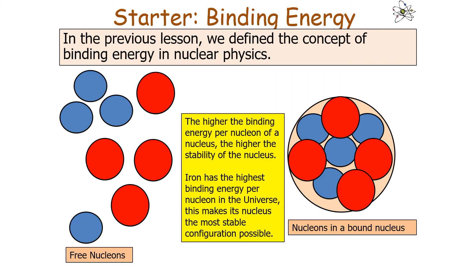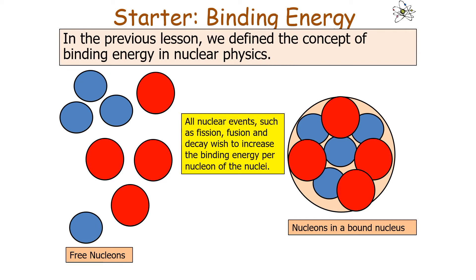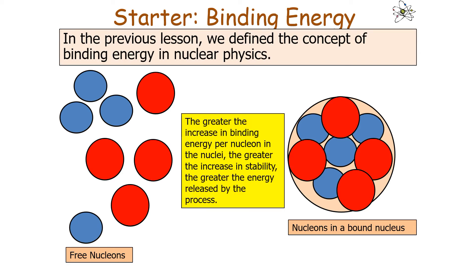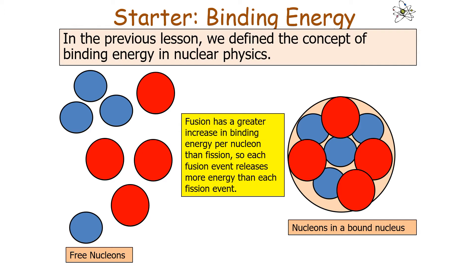Because iron has the highest binding energy per nucleon in the universe, its nucleus is the most stable configuration possible. All nuclear events such as fission, fusion, or decay wish to increase the binding energy per nucleon. The greater the increase in binding energy per nucleon, the greater the energy released. Fusion has a greater increase in binding energy per nucleon than fission, so each fusion event releases more energy than each fission event.